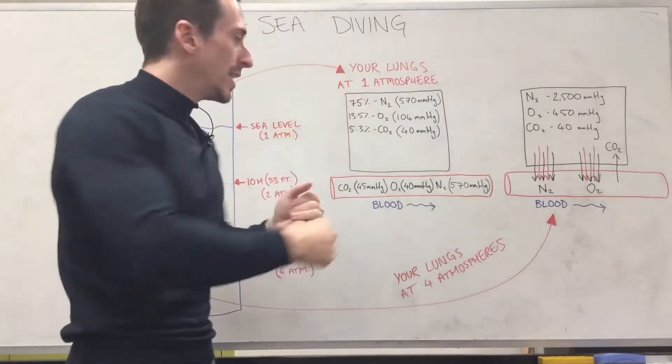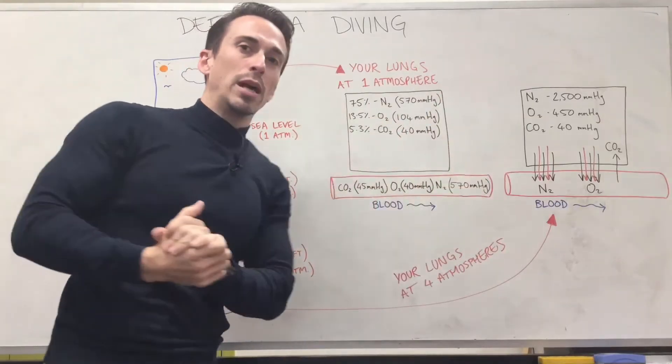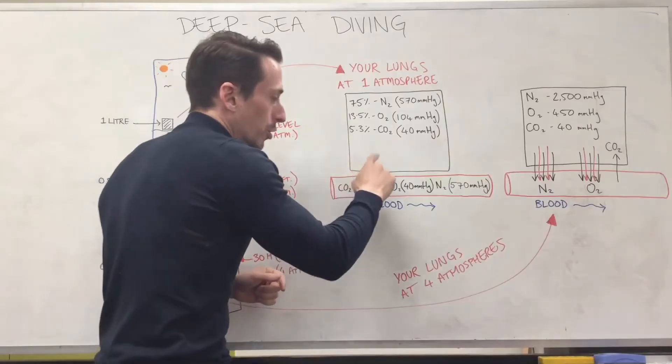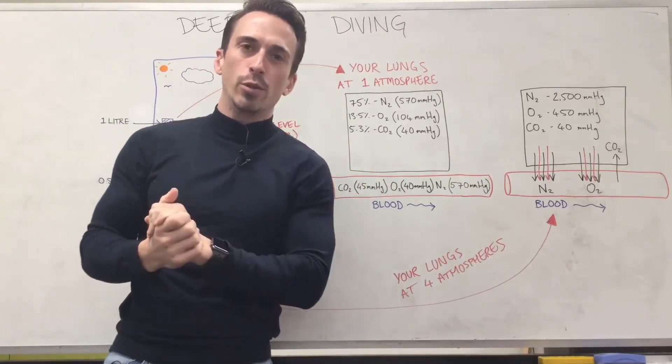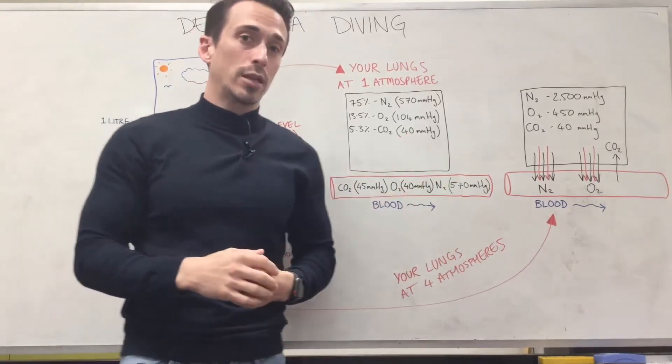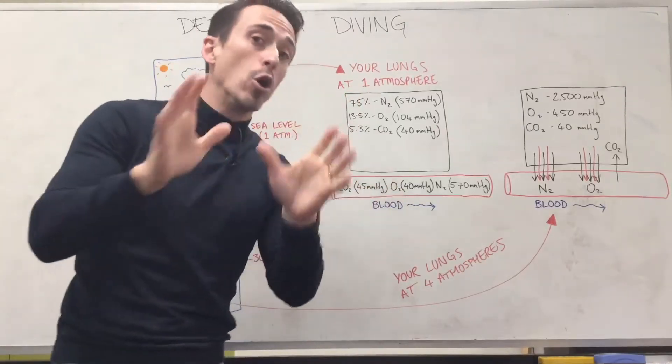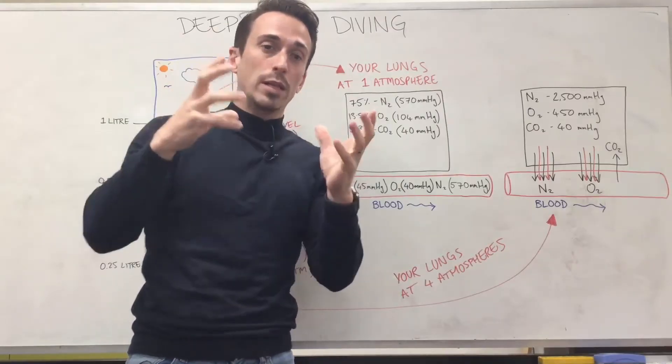And what that means is it loves to dissolve in the fluids of the lungs and the fluids of the blood, which means you don't have to give it as much of a push in order for it to cross that respiratory membrane. Oxygen isn't actually that soluble at all. You'll find that not much oxygen is dissolved in our blood. Hardly any is dissolved in the blood. Most of it, if not nearly all of it, well most of it I should say, is bound to hemoglobin. Red blood cells.